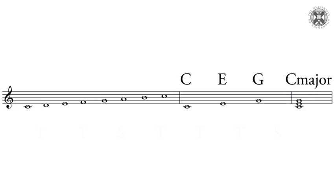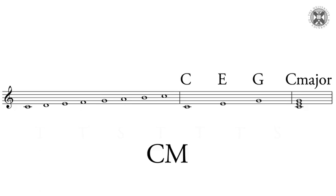Now there are other ways of writing this. If you play a lot of rock music or jazz, you're used to using something called a lead sheet, where instead of writing the chords out with notation, we use chord symbols. For C major it could simply be shown with a capital C, or 'C maj' abbreviated for C major, or a capital C and a capital M. All of those could be used in different kinds of music.